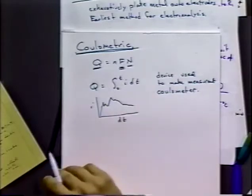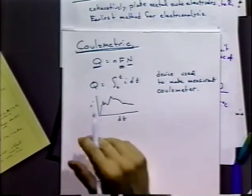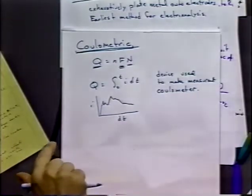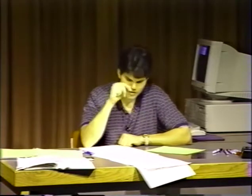The way a coulometer works is often it uses a capacitor as an integrating element. The more the voltage increases on a capacitor, the more charge is on that capacitor, so by detecting the voltage across the capacitor, you get a direct readout of the amount of charge that has been passed.